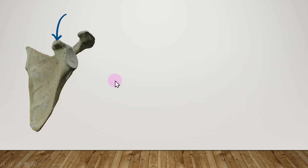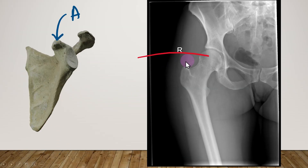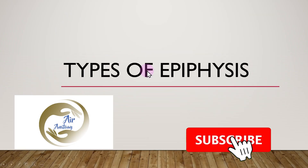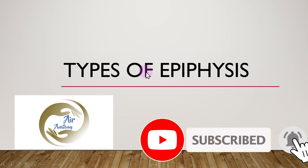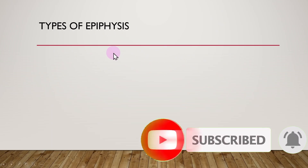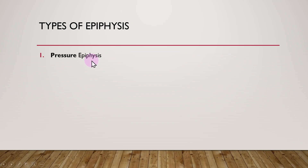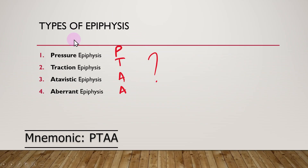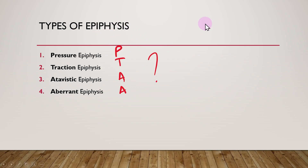What is the type of epiphyses in A, B, and C? Welcome to the Air Anatomy channel. I'm Dr. Doris and today we'll be learning about the types of epiphyses. Epiphyses are classified into four types: pressure, traction, atavistic, and aberrant epiphyses. You may remember this with the mnemonic PTAA. If you don't know what epiphyses are, please have a look at my previous video on epiphyses.